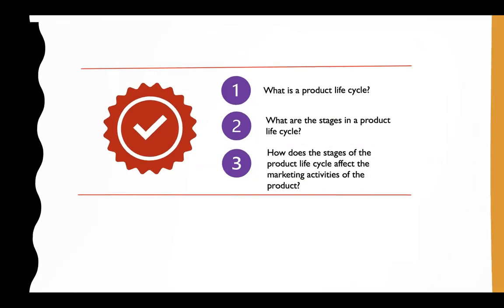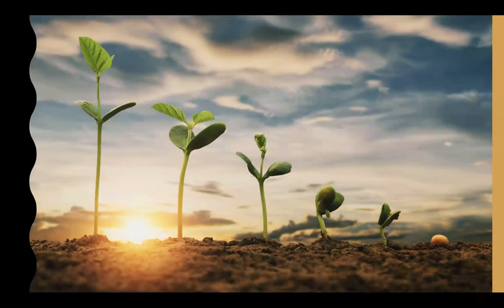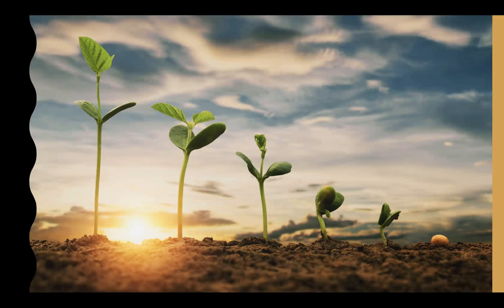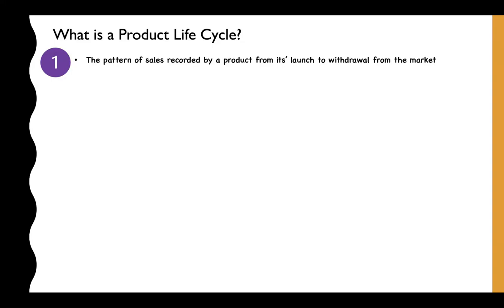So, what is a product life cycle? It is the pattern of sales recorded by a product from its launch to its withdrawal from the market. Think of it like a plant growing from a little seed — there is growth in business too, from the time a product is introduced into the market to the time it declines and we no longer hear of it. The product life cycle looks at the product's introduction, growth, survival, maturity, and eventual decline.